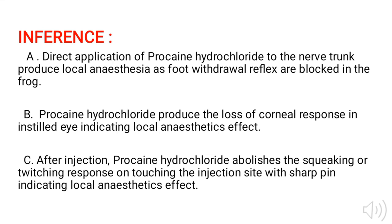Inference: Direct application of procaine hydrochloride to the nerve trunk produces local anesthesia, as the foot withdrawal reflex is abolished in the frog. Second, procaine hydrochloride produces loss of corneal response in the instilled eye, indicating the local anesthetic effect. After injection, procaine hydrochloride abolished the squeaking or twitching response on touching the injection site with a sharp pin, indicating the local anesthetic effect.